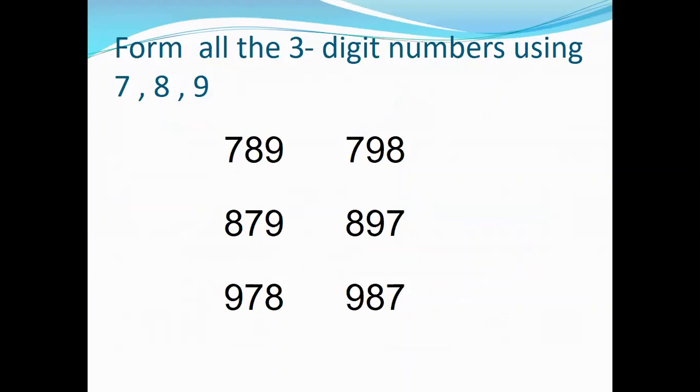Let's take one more example. We have to form three-digit numbers using 7, 8, and 9. So first of all, we make 789 and then 798. Then we use 8 at hundreds place and it becomes 879 and 897. Then we take 9 at hundreds place and it becomes 978 and 987. Easy. I think you will be able to do it.